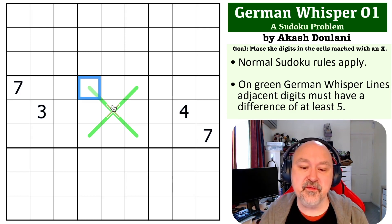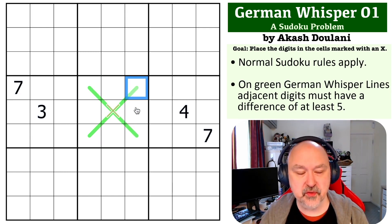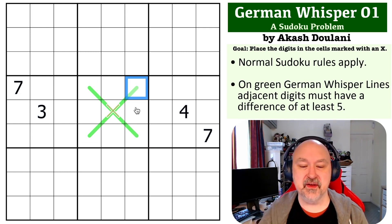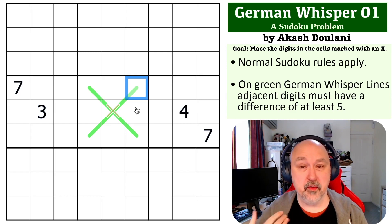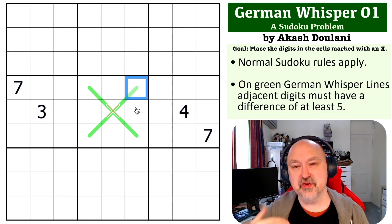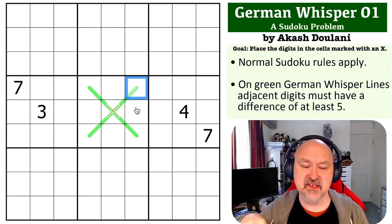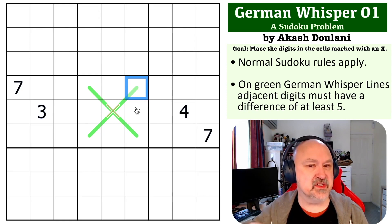So if you think about the nature of a whisper line, first of all, you can never put five on a whisper line because five different from five would be zero lower or ten or higher. But if you take that a step further, then any digit you place on a whisper line must leapfrog over the five. If you use one, two, three, four, then five different from that is going to be in the band of six, seven, eight, nine. So any digit on a whisper line that is low, all of its neighbors are going to be high, and any digit that is high, all of its neighbors are going to be low.